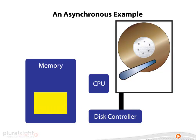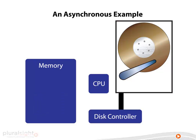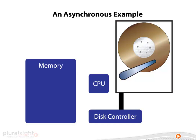Now, in human terms, this all happens pretty quickly — it's faster than the blink of an eye, and I've obviously slowed things right down in this illustration. But actually, compared to the rate at which modern CPUs work, the disk moves painfully slowly. It can take several milliseconds, which is time enough for the processor to execute many millions of instructions.